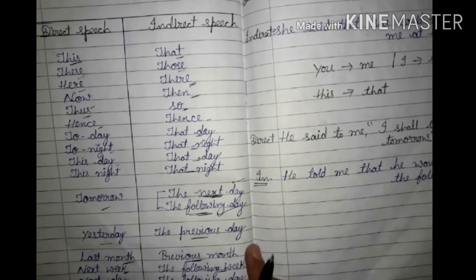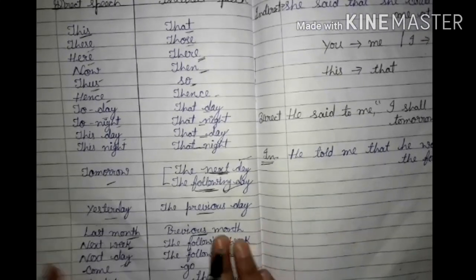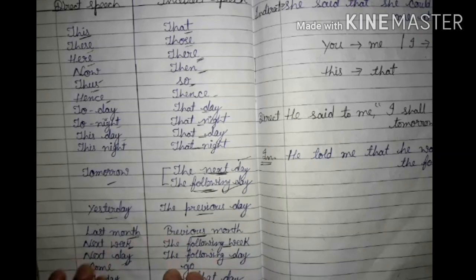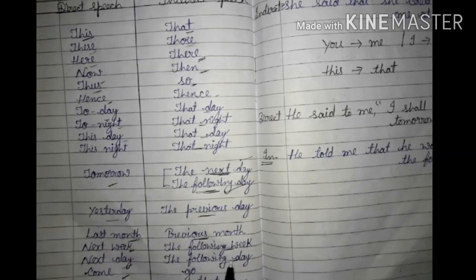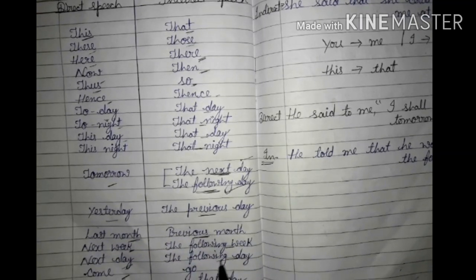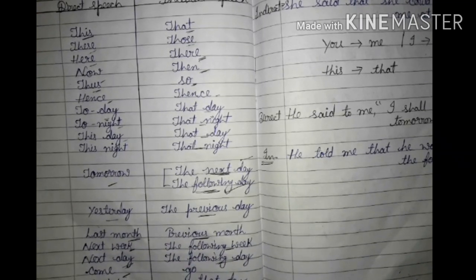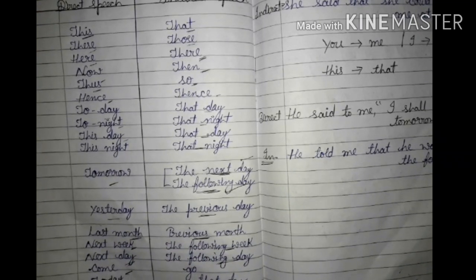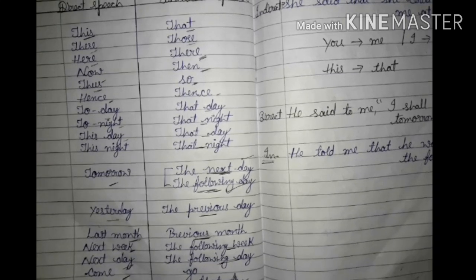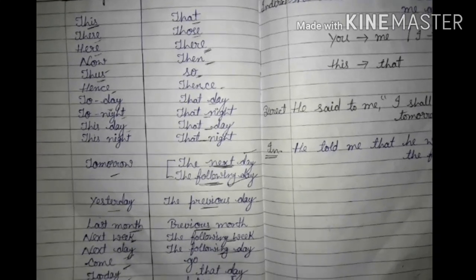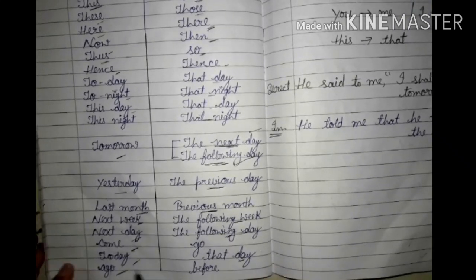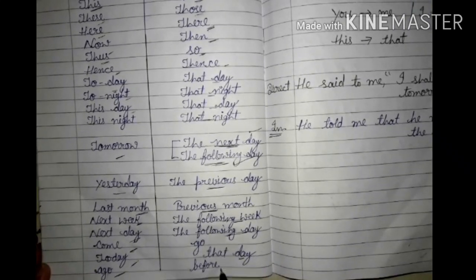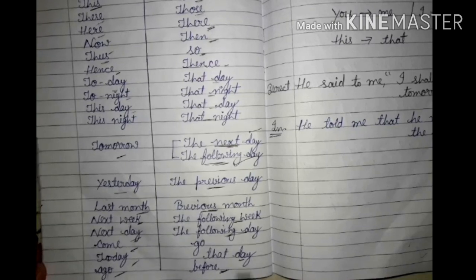'Last day' changes into 'the previous day'. 'Next week' changes into 'the following week'. 'Next day' changes into 'the following day'. 'Come' changes to 'go', 'ago' changes to 'before', and 'today' will change into 'that day'.